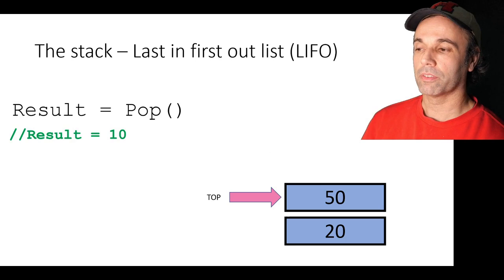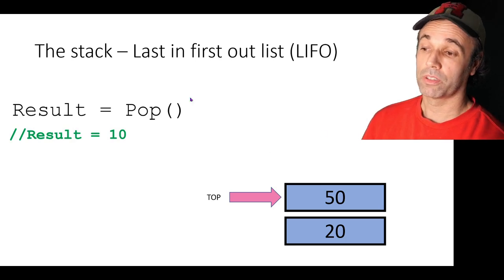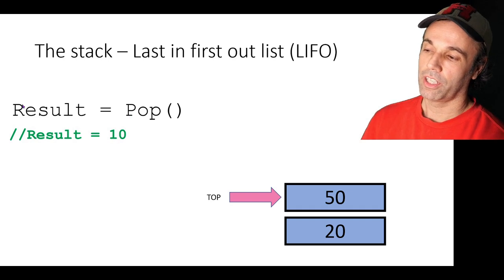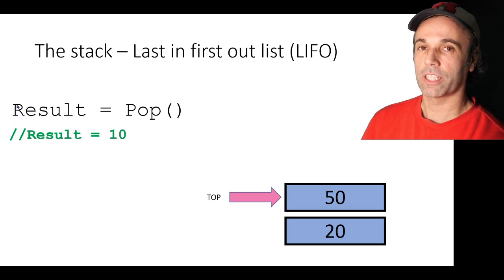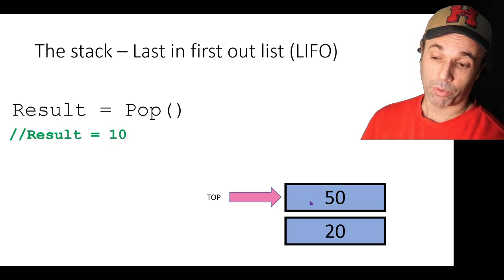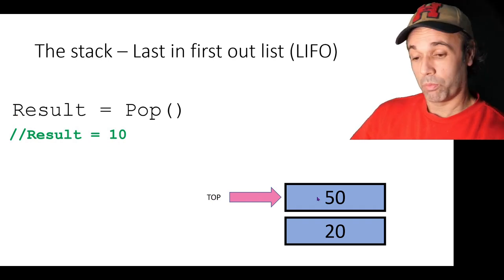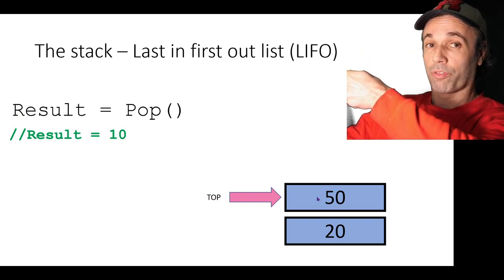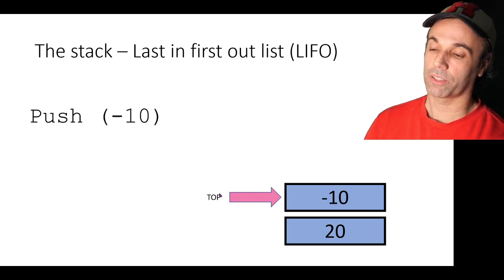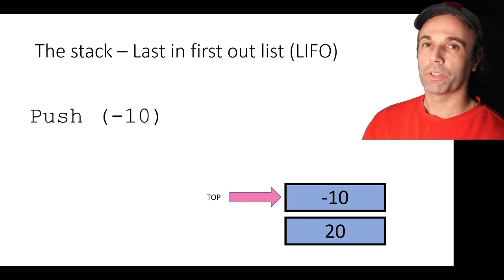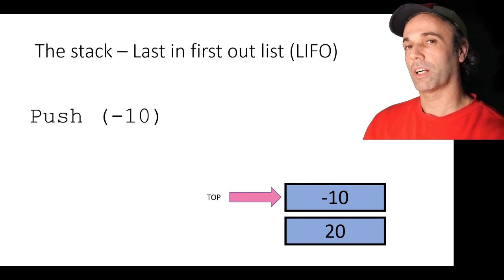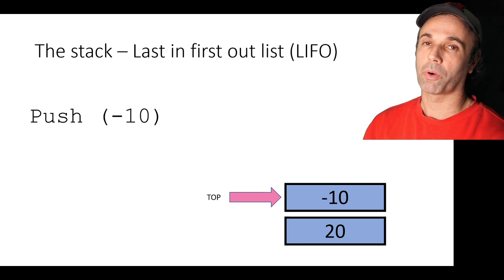That item gets put on top of the stack and the top pointer points at the new top. This one's a bit different. This time we've made a call to the function pop. That doesn't take any arguments and in this implementation it returns the integer contained within the item. So we've got the value 10 and the top now points to the new top once we've removed one of those off the stack. And then we push something on again — now we've pushed negative 10 onto the stack. We can use push to put items on top of the stack and pop to get items off.